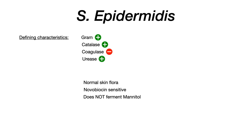Some other things to know about Staph epidermidis: it's part of the normal skin flora, which is really important as you conceptualize what kind of infections this pathogen causes. The other two bits of information you need to memorize are: one, Staph epidermidis is novobiocin sensitive; and two, Staph epidermidis does not ferment mannitol. Just memorize these because, in addition to the coagulase negative and urease positive characteristics, they are another way to differentiate Staph epidermidis from other Staph like Staph aureus.